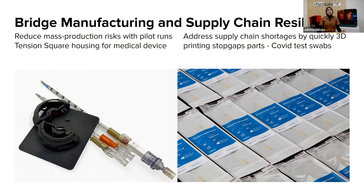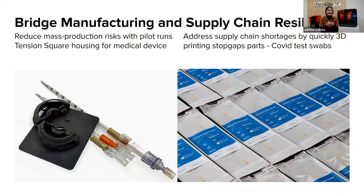One example on the left is Tension Square, a user making medical devices who produced pilot runs with SLS printing for market testing. On the right is an example of 3D printing being used to address supply chain shortages — specifically, 3D printed COVID test swabs used by many customers during the pandemic. This is a great situation where 3D printing serves as a temporary solution to increase supply chain resilience.